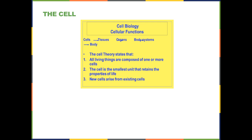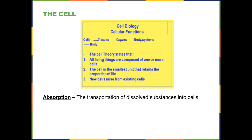The third aspect of cellular theory is that all new cells must come from prior existing cells. Remember we also talked last week about spontaneous generation. Now we're going to talk about some basic cellular functions. The first is absorption, which is the ability to transport dissolved substances into the cell.